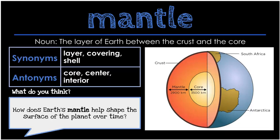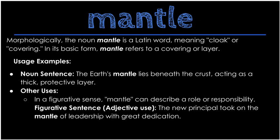Some synonyms, as best we could find, would be layer, covering, or shell. Antonyms would be core, center, or interior, because obviously it's not that. The think-about-it question is: how does earth's mantle help shape the surface of the planet over time? You may have to read the story to understand that question. Morphologically, the noun mantle is a Latin word meaning cloak or covering. In its basic form, mantle refers to a covering or layer. In a figurative sense, mantle can describe a role or responsibility, as in: the new principal took on the mantle of leadership with great dedication.